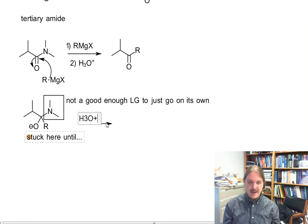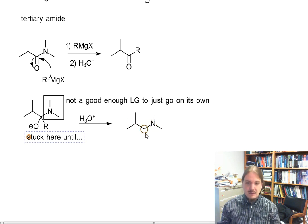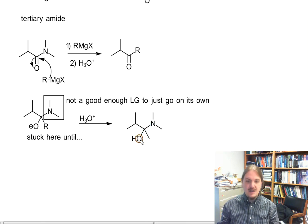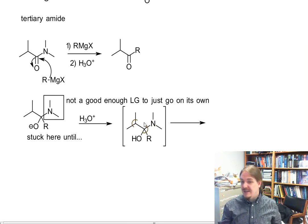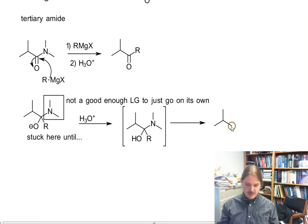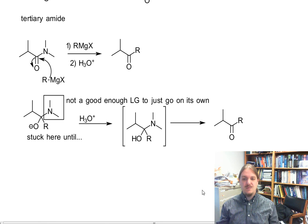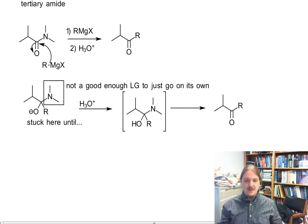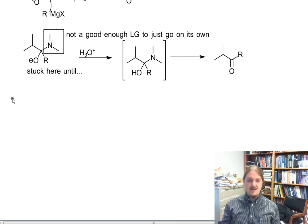Once we neutralize it with acid, we generate this hemi-aminal, which we know hydrolyzes in aqueous acid to form the ketone. Now you can protonate the amine, make it a better leaving group, and continue to go on through to the ketone. The amine comes off and even gets further protonated in acid. This is a really cool way to make ketones from tertiary amides.